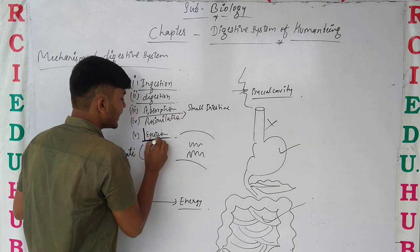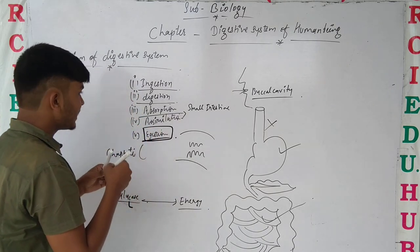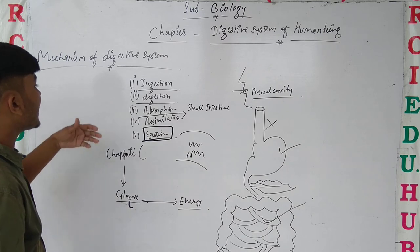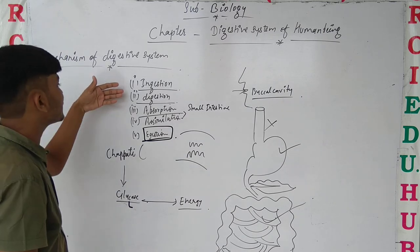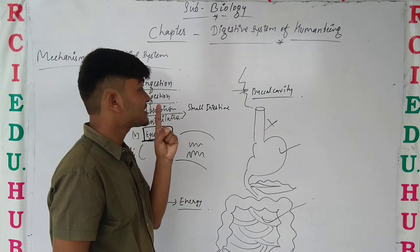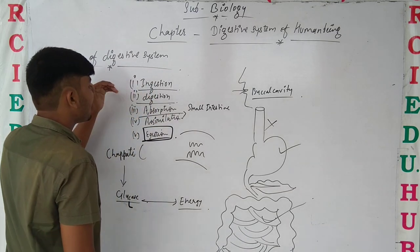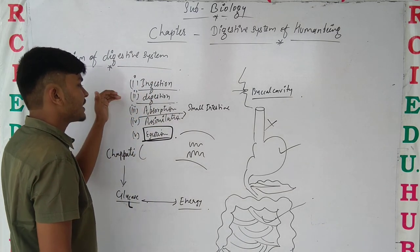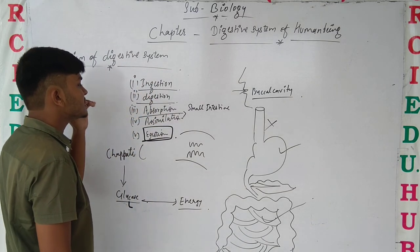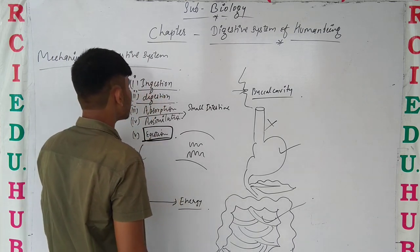So we have seen that the digestive mechanism is divided into five steps: number one is ingestion, number two is digestion, number three is absorption, number four is assimilation, and number five is ejection.